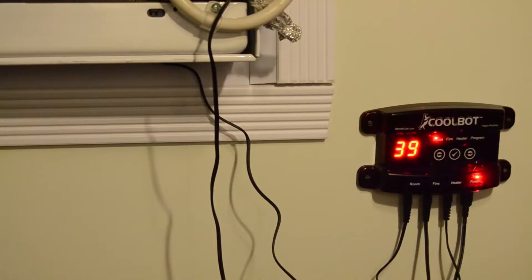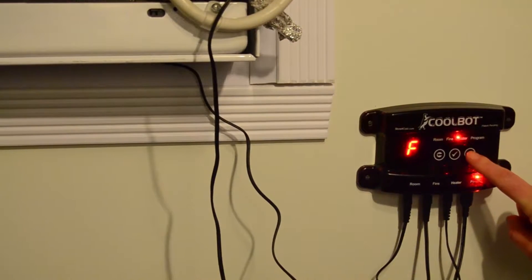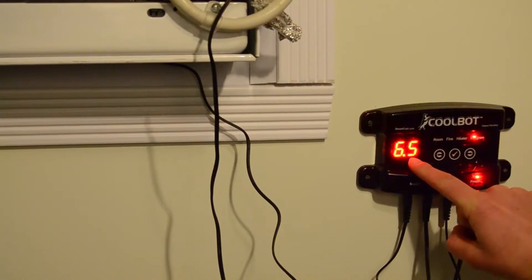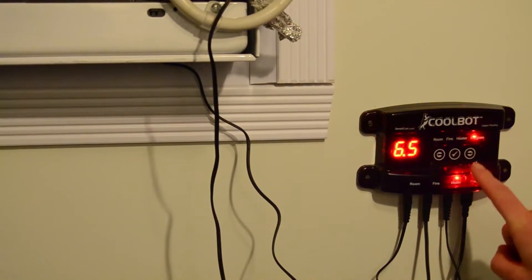Here's how to change your CoolBot from Fahrenheit to Celsius or Celsius to Fahrenheit. First, use the right arrow to go over to program mode. When the light is on over program and the screen reads the firmware, press